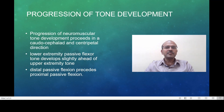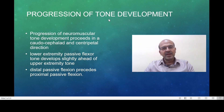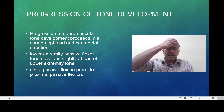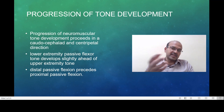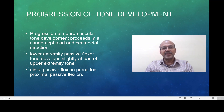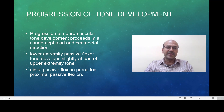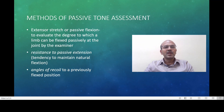Most tests in the Ballard score depend on eliciting passive tone. The basis for the neuromuscular aspect of Ballard scoring is the progression of tone development, which also applies to physical parameters. Neuromuscular tone development proceeds in a caudal-to-cephalad direction and a centripetal direction — from periphery to center. The lower extremity passive flexor tone develops slightly ahead of the upper extremity, and distal passive flexion precedes proximal passive flexion. These principles apply to tests like the popliteal angle and square window.